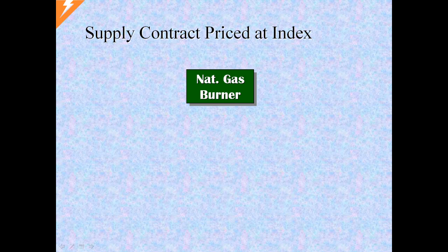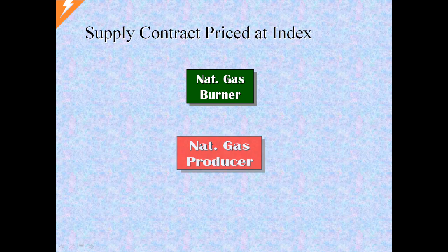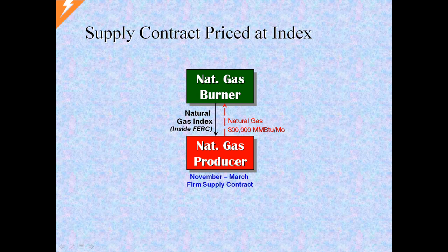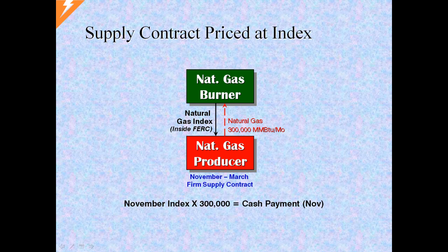Energy supply contracts are common in which a fixed price is not specified. Rather, the pricing will be determined by the future market index. For example, a gas burner enters into a firm supply contract with a producer who will deliver 300,000 MMBTU per month for the months November through March. Against these deliveries, the burner will pay the natural gas index price for the respective month and location as published on the first of the delivery month by the publication Inside FERC. So for November delivery, the burner will pay November index multiplied by 300,000. For December delivery, the burner pays December index multiplied by 300,000, and so on.